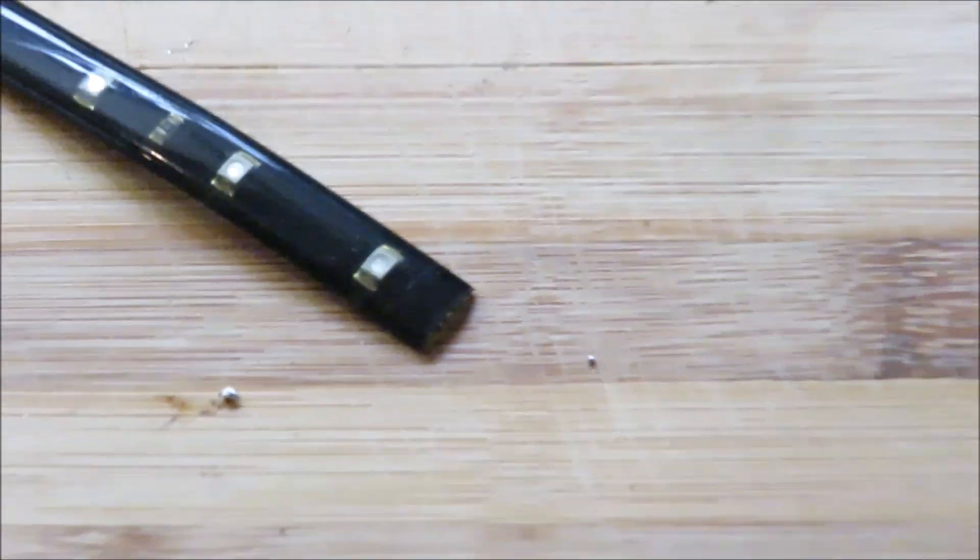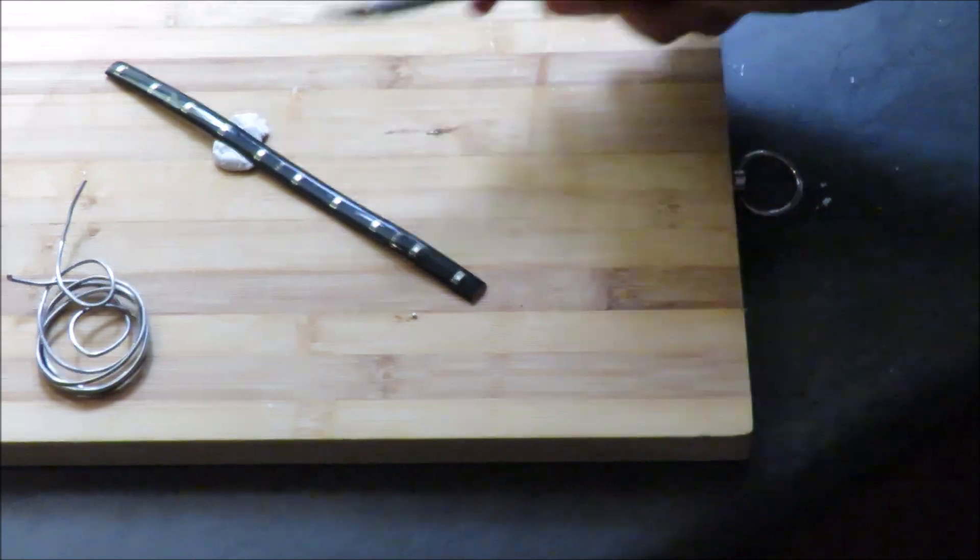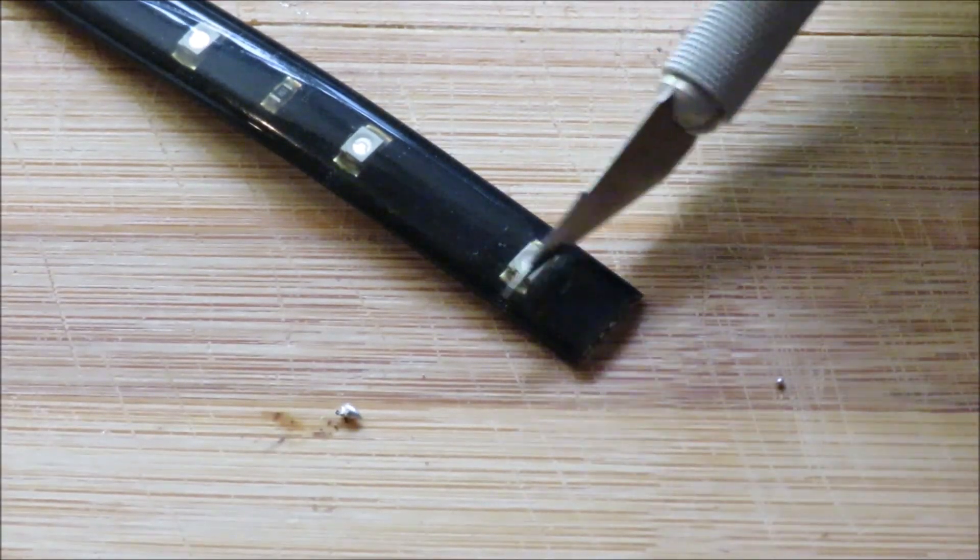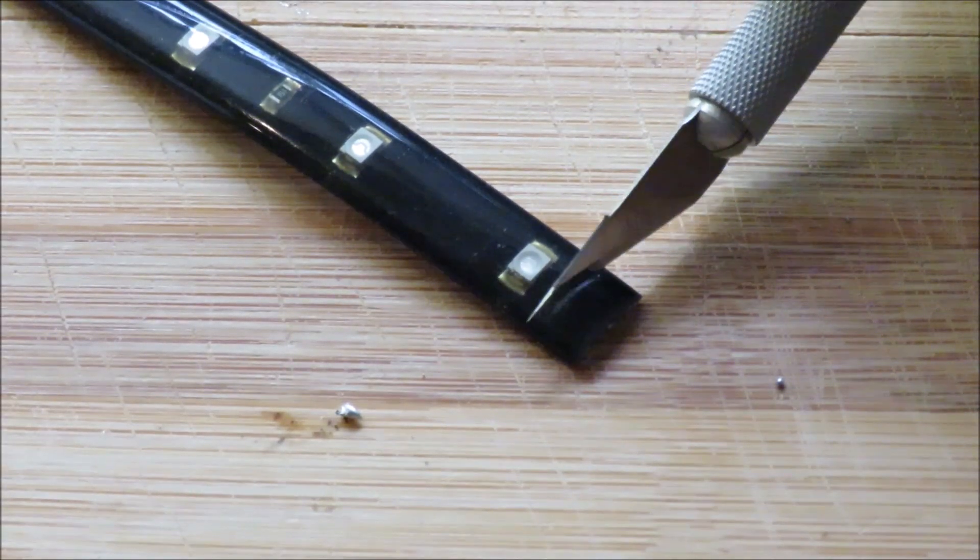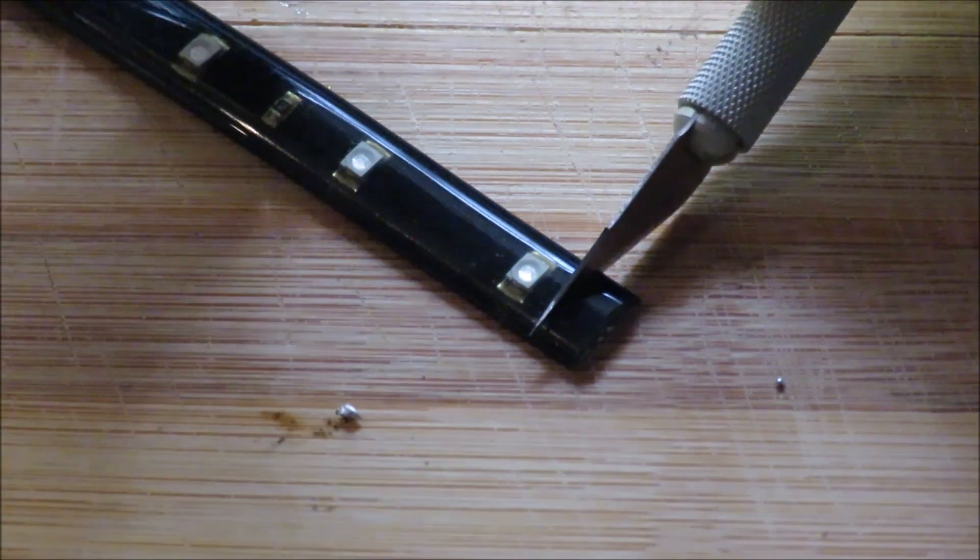So I've actually stuck my light onto a breadboard using some silly putty. So what I'm going to do is I'm just going to cut it around about there. I think that's going to give me enough room to work with.